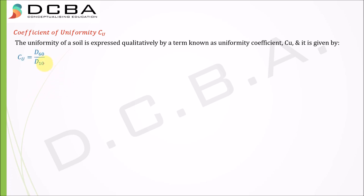Now what is coefficient of uniformity, Cu? The uniformity of a soil is expressed qualitatively by a term known as uniformity coefficient Cu, and it is given by D60 divided by D10. Where D60 is particle size such that 60% of soil is finer than this, and D10 is particle size such that 10% of soil is finer than this.